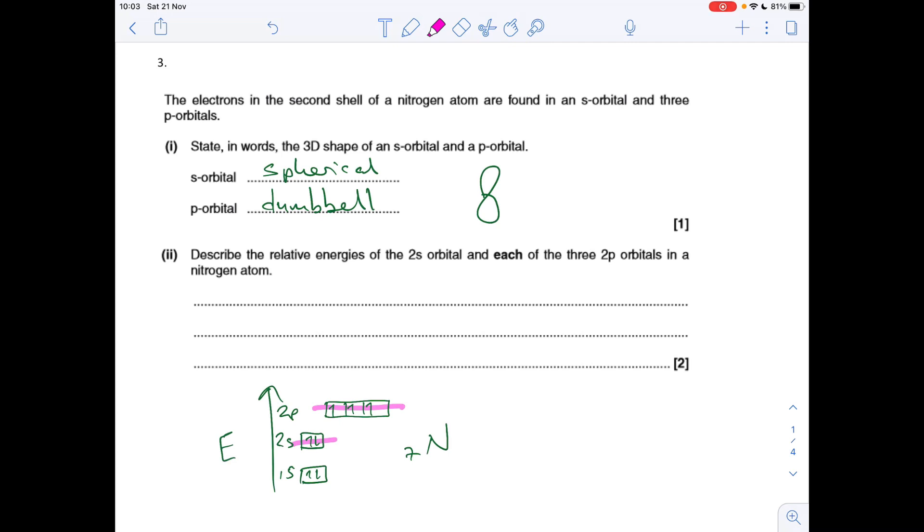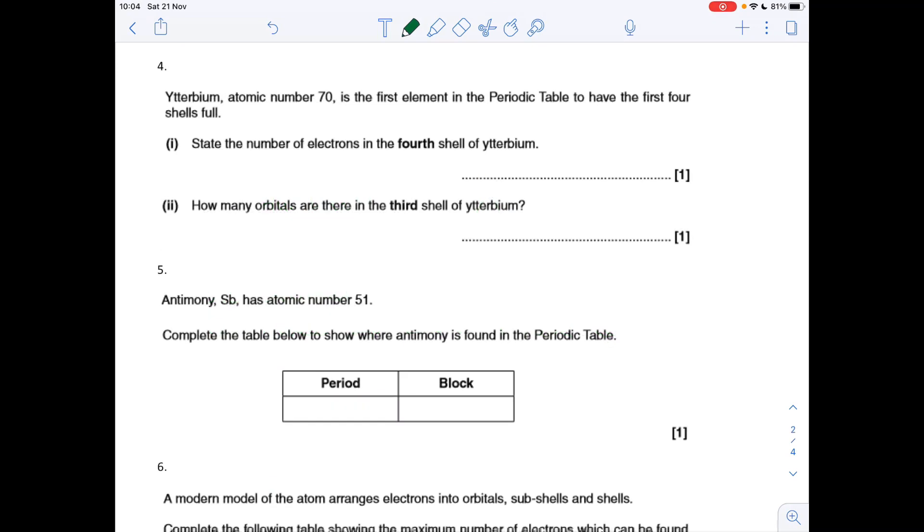Question four is about terbium, with quite a high atomic number of 70. It's way past number 36, which is where A-level goes up to in terms of writing electron configurations.